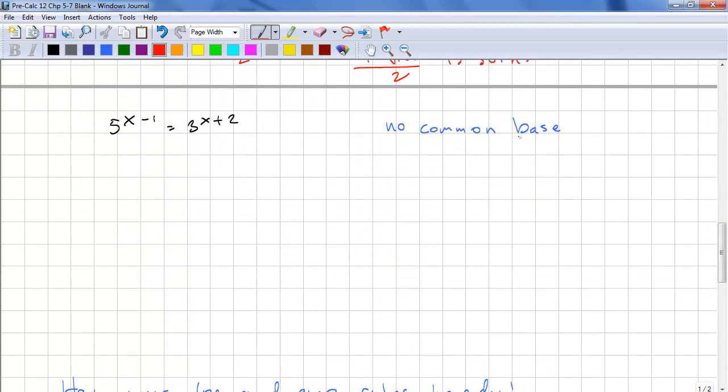Again, we have no common base. So let's take the log of both sides. We have log(5^(x-1)) = log(3^(x+2)).